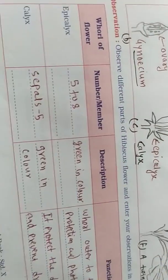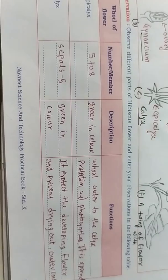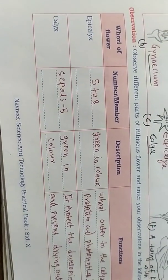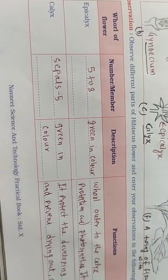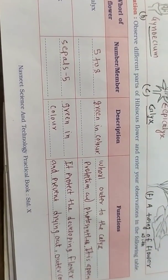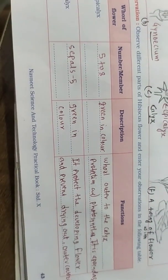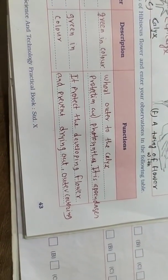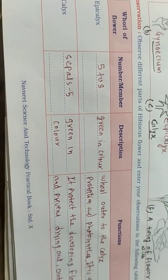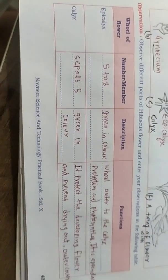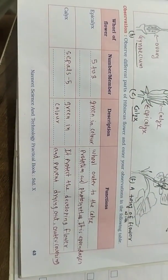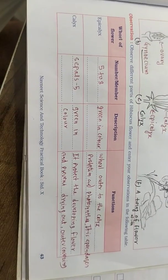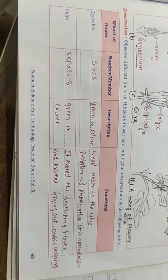The epicalyx has 5 to 8 members generally. The epicalyx is green in color and provides protection and photosynthesis — it is an appendage of the flower. The calyx has 5 sepals, which are green in color, and it protects the developing flower. The function of the calyx is to protect the developing flower and prevent drying out; it acts as the outer covering.